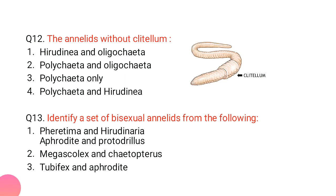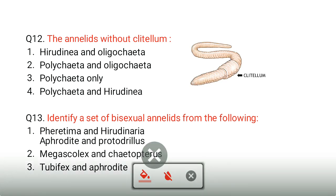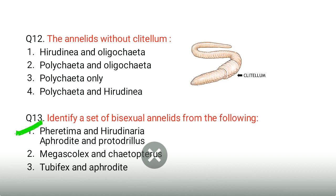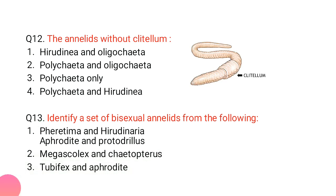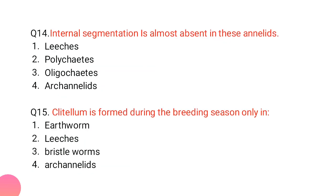Bisexual annelids: bisexual means a single body able to produce both sperms and ova. Pheretima and Hirudinea are hermaphroditic — they have both sexes in their bodies, so we can't say they are strictly male or female. Therefore, Pheretima and Hirudinea are the hermaphroditic and bisexual annelids.